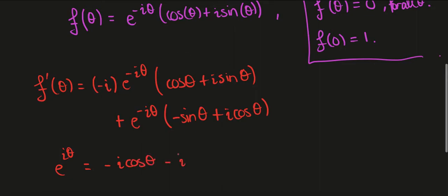then I'll have minus i squared sine theta, I'll have minus sine theta, and then plus i cos theta.